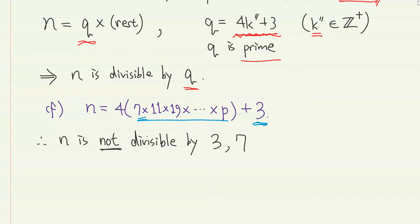And by the same logic, n is also not divisible by 11, 19, and so on. Basically all the prime numbers of the form 4k plus 3, up to the largest one, p. But we have previously shown that n is divisible by q.